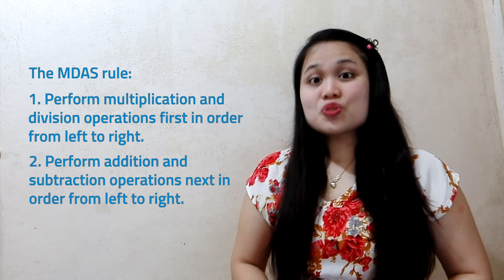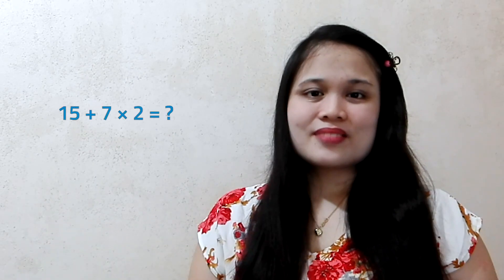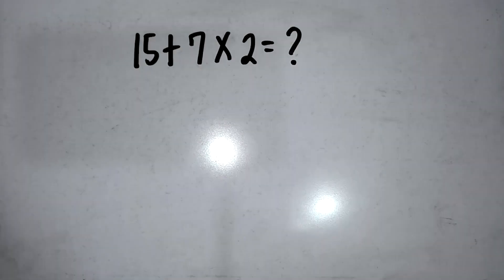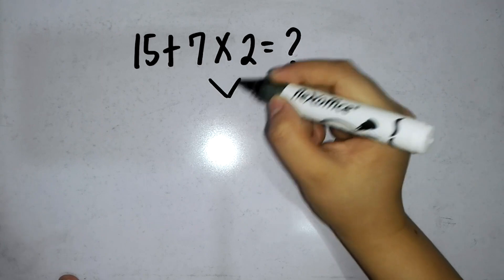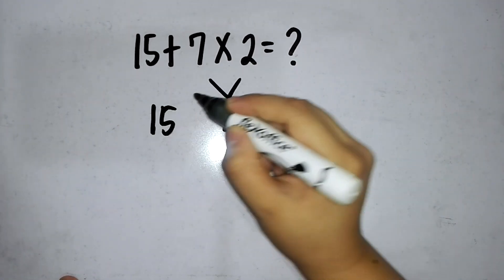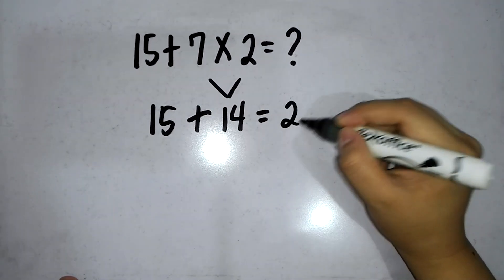Now let's try more examples using the MDAS rule. What are the operations you can spot in this expression? We see addition and multiplication here. Which operation will we perform first? We will start with multiplication followed by addition. Let's multiply 7 and 2 first. The product will be 14. Then add 15 and 14. So the final answer will be 29.